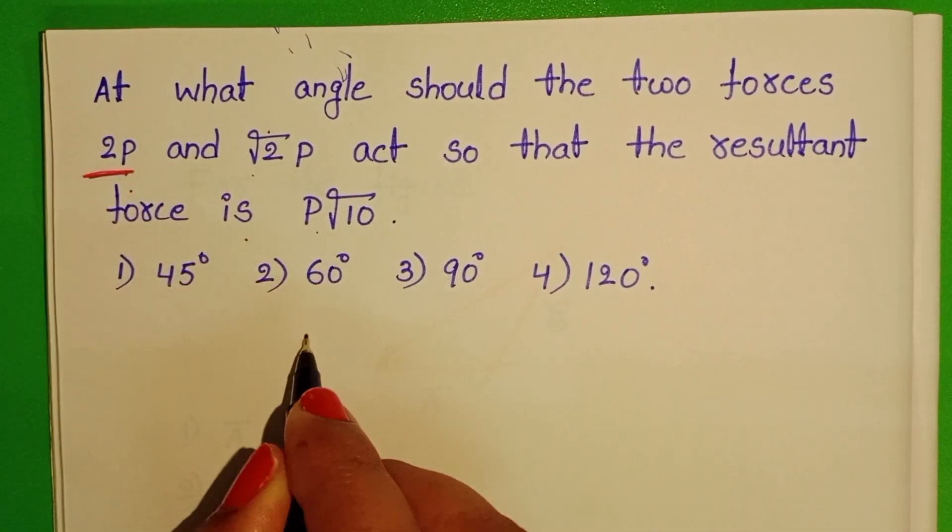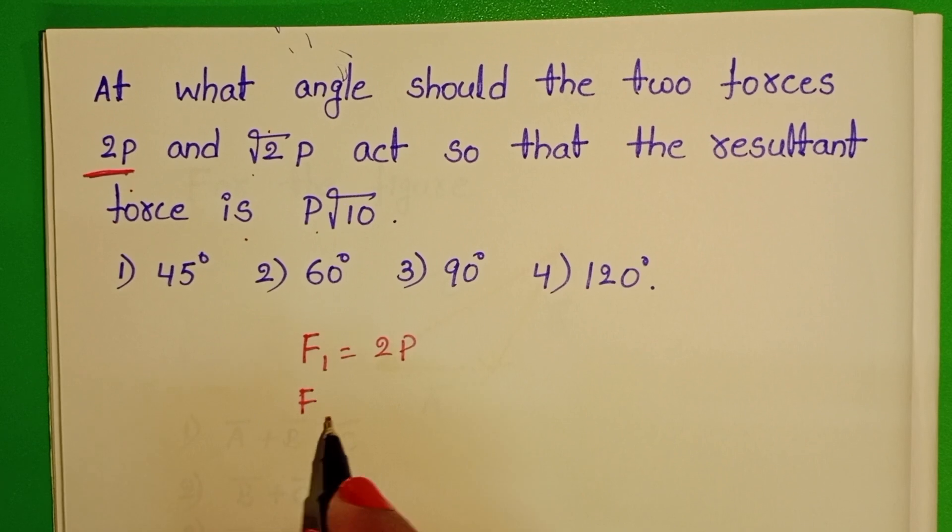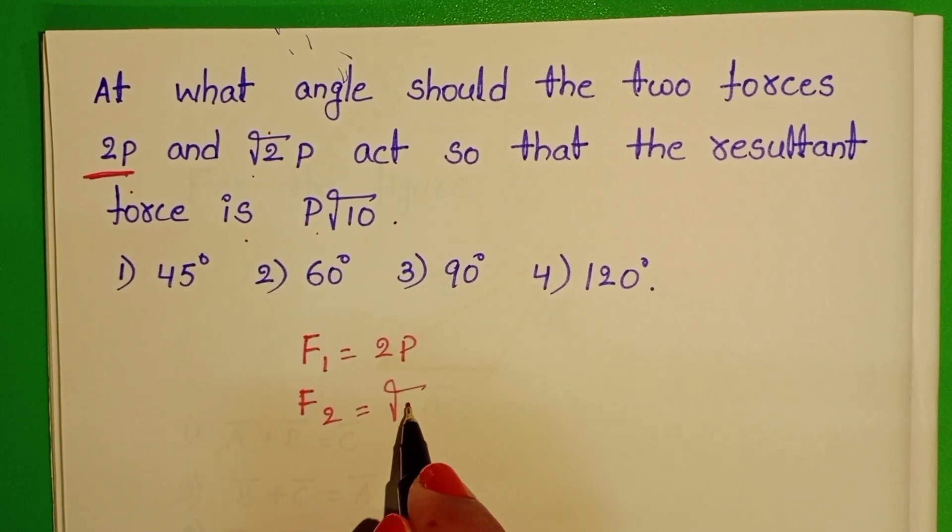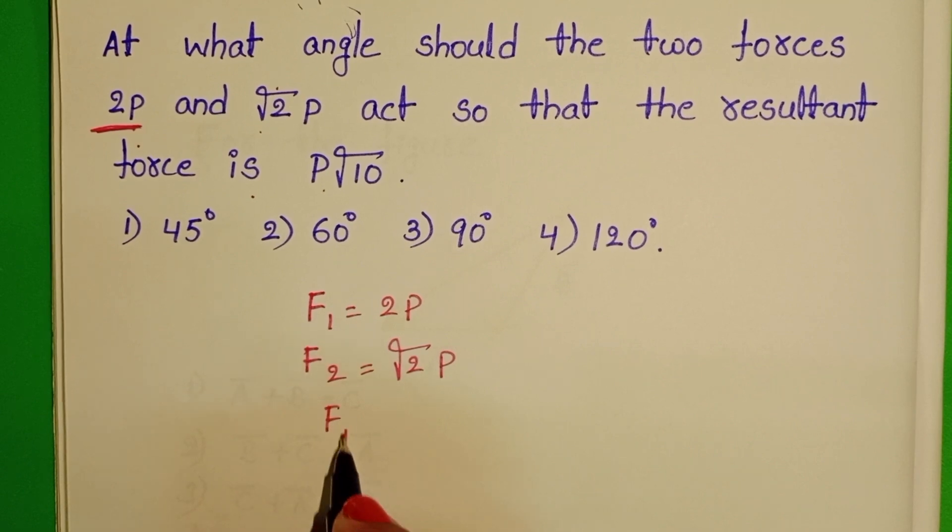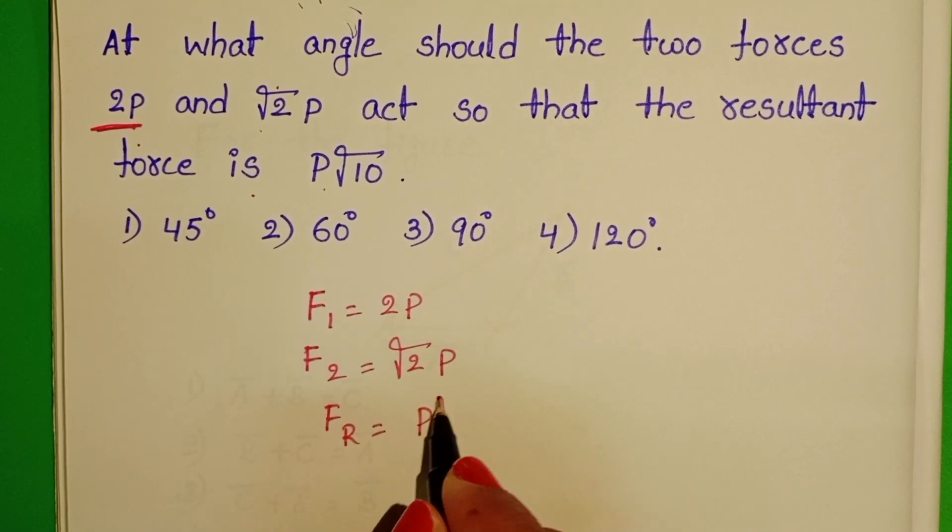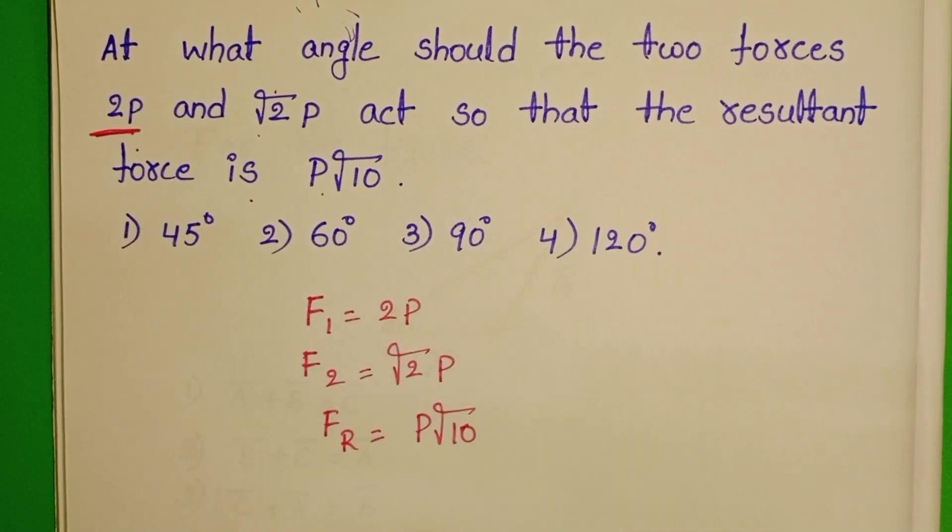Let us take the first force F1 equals 2P and second force F2 equals root 2P, and resultant of the two forces is P root 10. We have to find out the angle between the two forces.